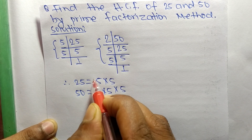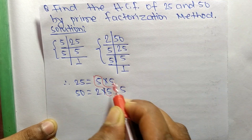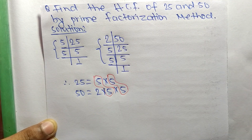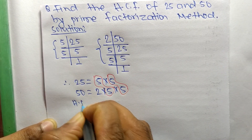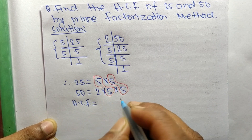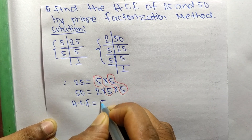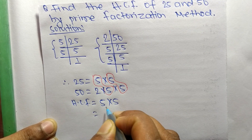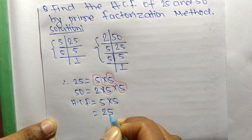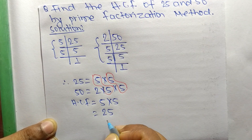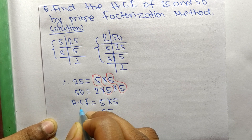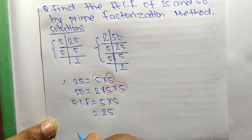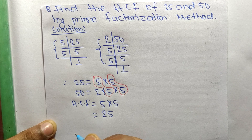The common factors are 5 and 5. So the HCF is equal to the common factors: 5 times 5, which equals 25. Therefore 25 is the HCF of 25 and 50. That's all for today — thanks for watching.